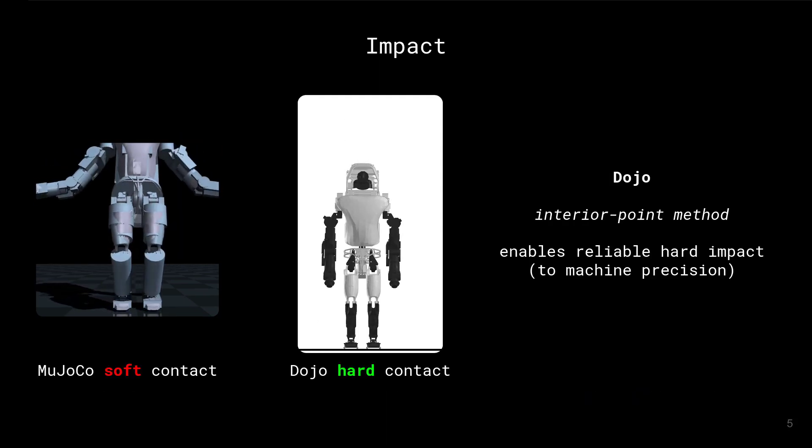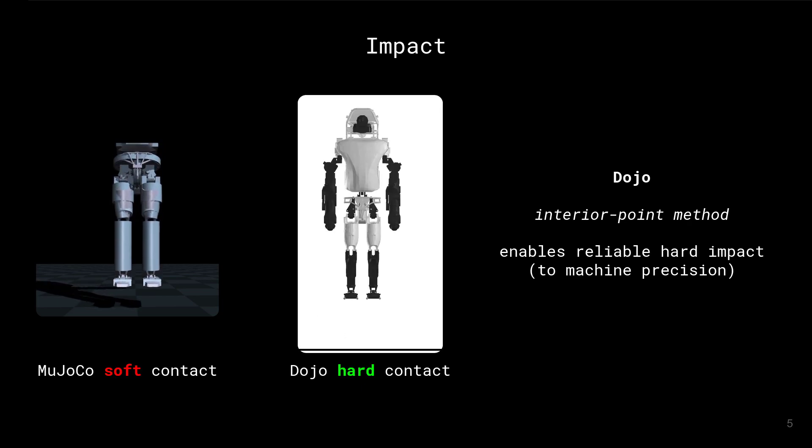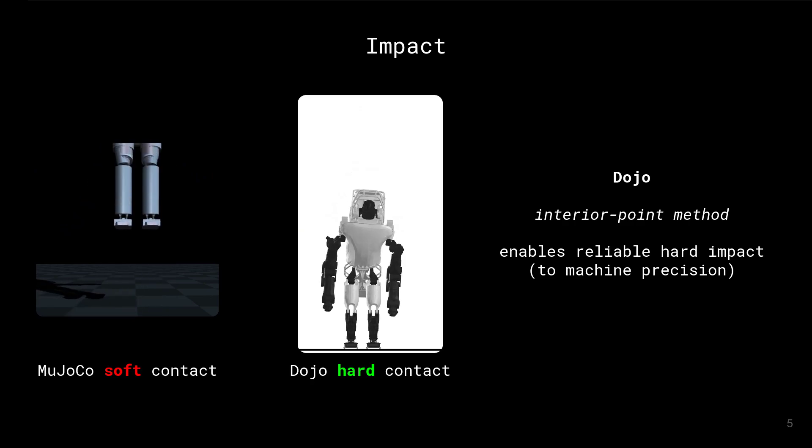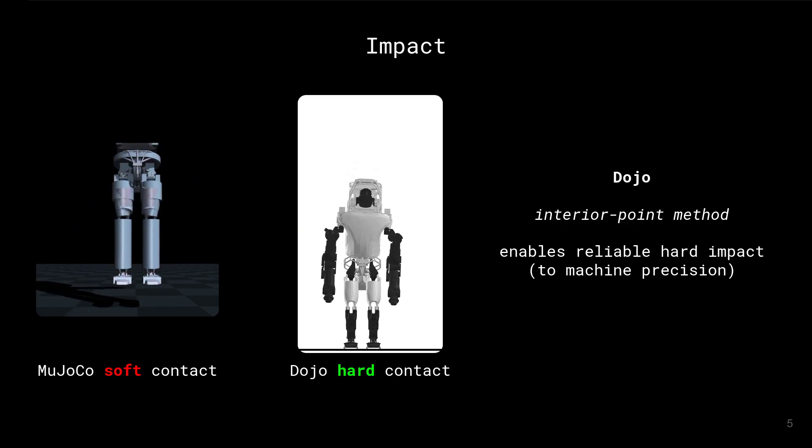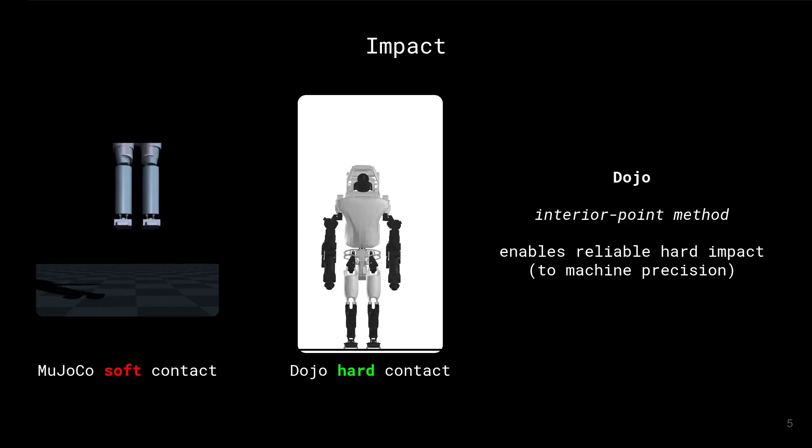Thanks to its primal dual interpoint solver, DOJO is able to simulate hard impact and enforce non-penetration constraints up to machine precision. On the other hand, MUJOKO suffers from centimeters of interpenetration because of its soft contact model.